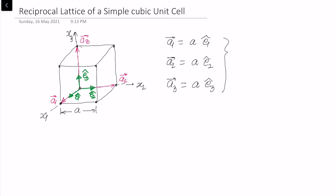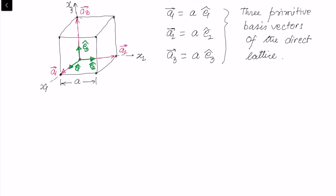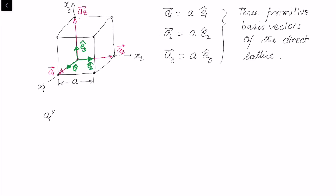These are the three primitive basis vectors of the direct lattice, and we wish to find out what the reciprocal lattice is for this simple cubic lattice. To find that, we use the formula for the basis vectors of the reciprocal lattice. For example, the first reciprocal basis vector a1 star is given by a2 cross a3 divided by v, where v is the volume of the unit cell.